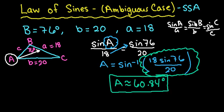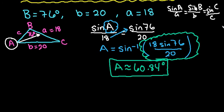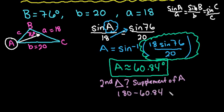At this point, we're going to check to see if there's only one triangle that can be formed or is it possible for a second triangle to be formed. So I'm basically asking myself, can I have a second triangle? And the way that I see if there is a second triangle is remember that the sine of this angle and the sine of the supplement are equal to each other. So I want to find the supplement of angle A. So I'm going to do 180 minus 60.84 and I get 119.16.